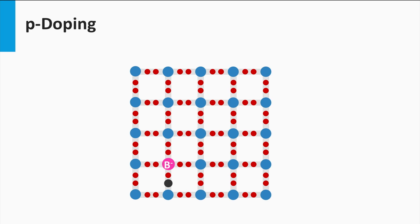Secondly, we are going to intentionally put boron impurities in the silicon network. Since the boron atom has only three valence electrons, it is missing one electron to make a molecular bond with its four neighboring silicon atoms. As a consequence, one molecular bond is filled with only one electron. This entity is the same as the hole. This extra hole is easily excited to a free mobile state as well.